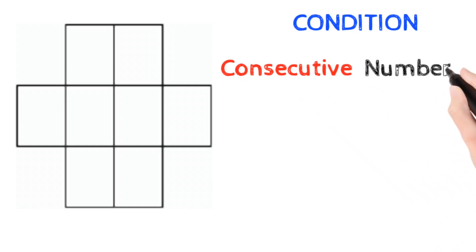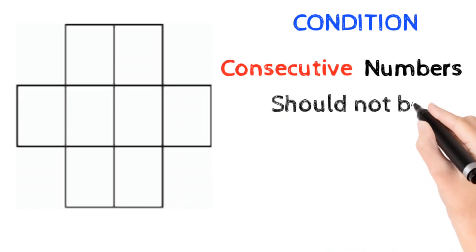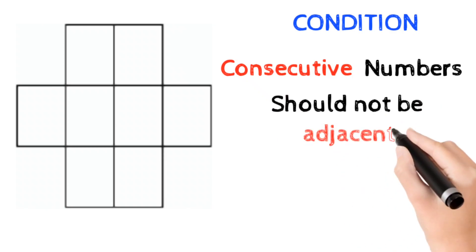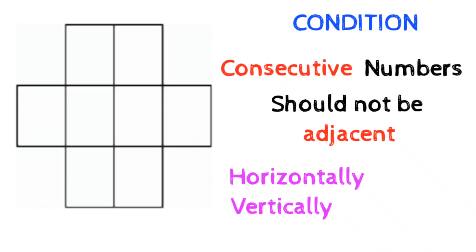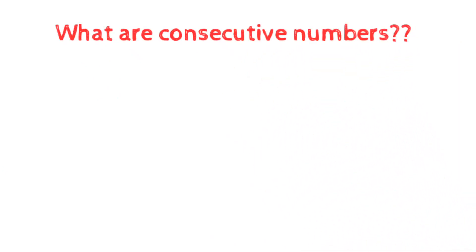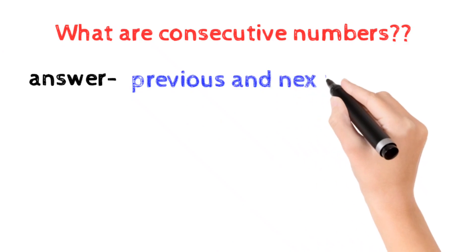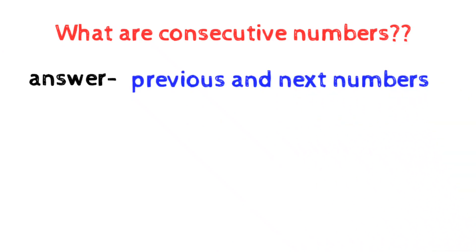The condition is: consecutive numbers should not be adjacent either horizontally, vertically, or diagonally. What do we mean by consecutive numbers? The answer is the previous and the next numbers. For example, what is the consecutive neighbor of one?